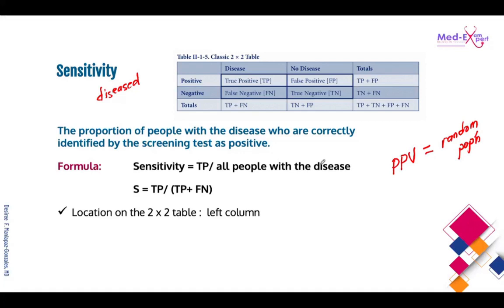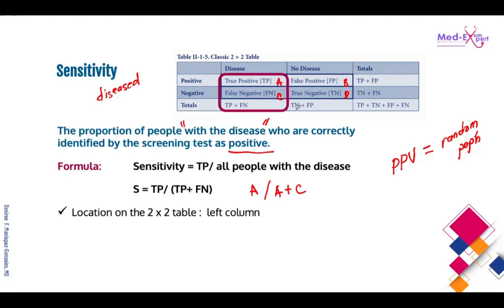Sensitivity is the proportion of people with the disease who are correctly identified by the screening test as positive. The formula is true positive over true positive plus false negative — or A divided by A plus C. In sensitivity, we only use the left column of the two-by-two table. Specificity is done in a healthy population — the proportion of people without the disease who are correctly identified as negative. The formula is true negative over true negative plus false positive, and we use the right column.